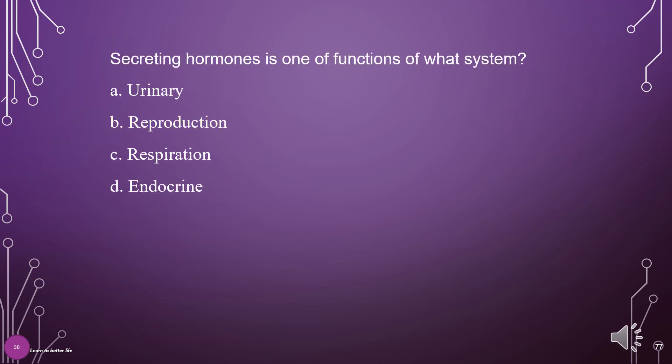Secreting hormones is one of the functions of what system? A. Urinary, B. Reproduction, C. Respiration, D. Endocrine. The answer is D: Endocrine.